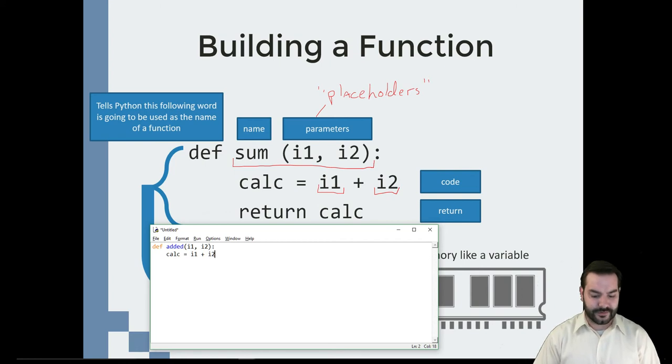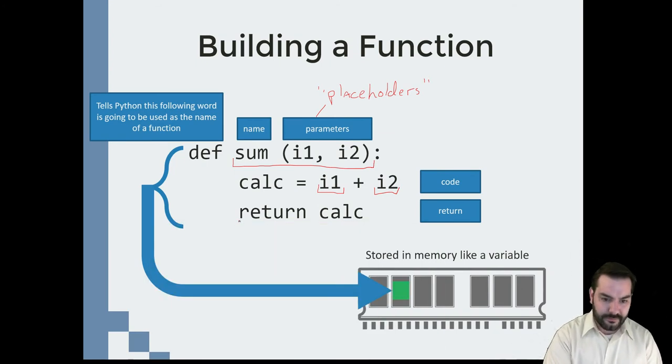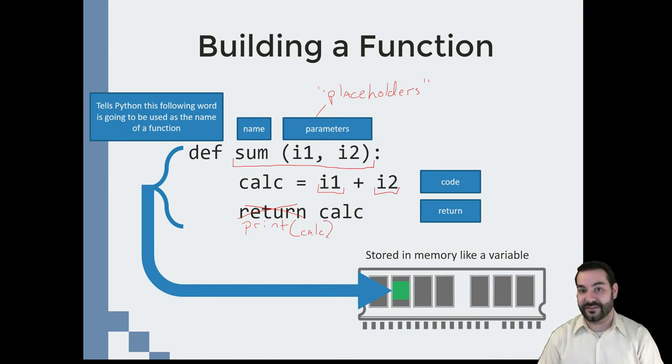Now one of the things you're noticing is here's where things get a little different from our traditional code. In most of our statements, we've always been ending with something called print. The problem is what print does is print displays something to my screen. If we're thinking about this from a more future perspective, I might not be touching my code. I might not actually even be a part of the program. I want this to be able to work autonomously without the use of a screen.